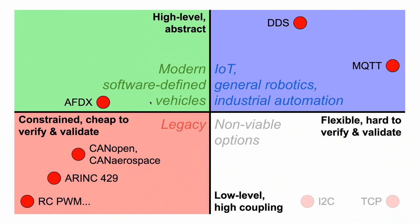They are designed for completely different applications, and that makes them non-viable. Finally, this is the place of UAVCAN — or at least the place we are striving to bring it to. The upper left corner of this diagram is the holy grail of onboard communication: something that is very easy to validate and at the same time provides rich abstractions, allowing developers to design complex applications easily. We are trying to push UAVCAN towards that upper left corner.